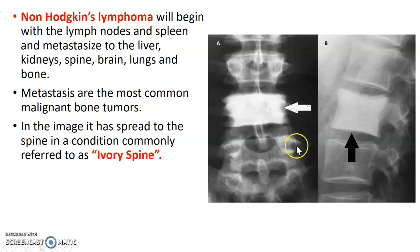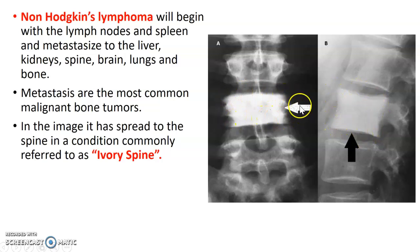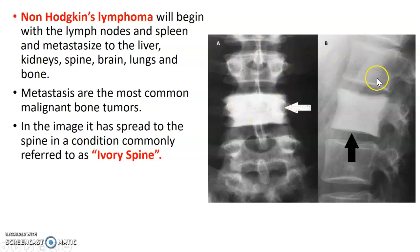This image demonstrates what we call ivory spine. You can see these vertebrae are almost solid white, unlike the regular bones you can see elsewhere in the image. This is an example of metastasis to the spine.